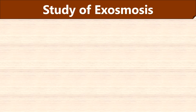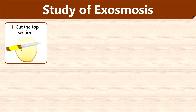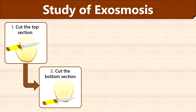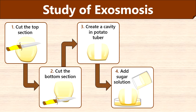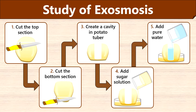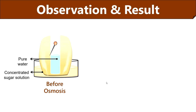To study exosmosis using a potato osmometer, follow the same procedure up to step 3. Then add concentrated sugar solution into the petri plate and add pure water to the cavity of the potato tuber. Then, to mark the level of water, insert a pin into the potato tuber.